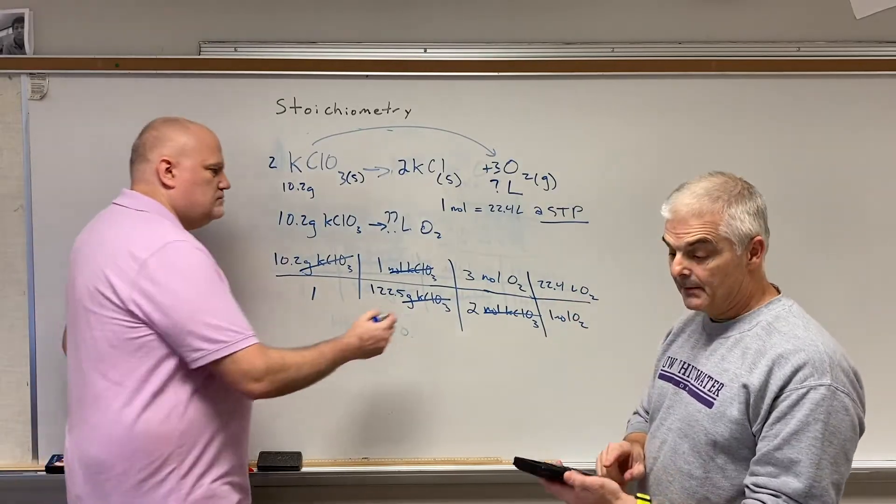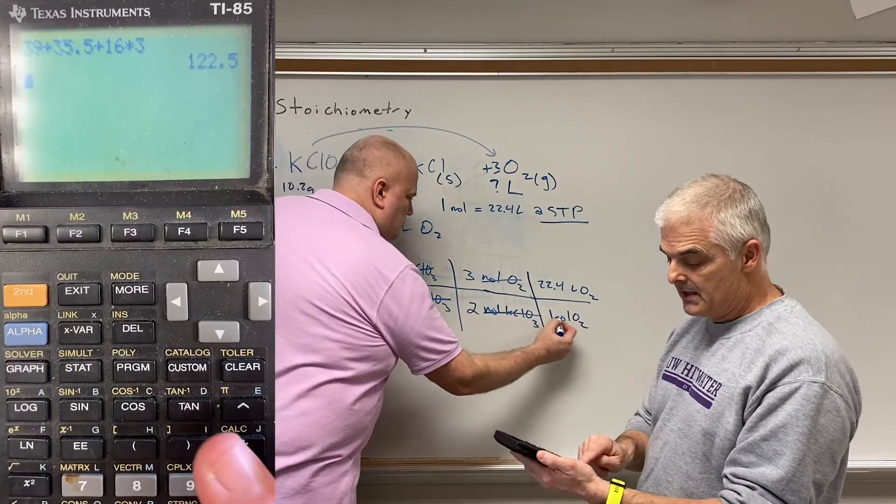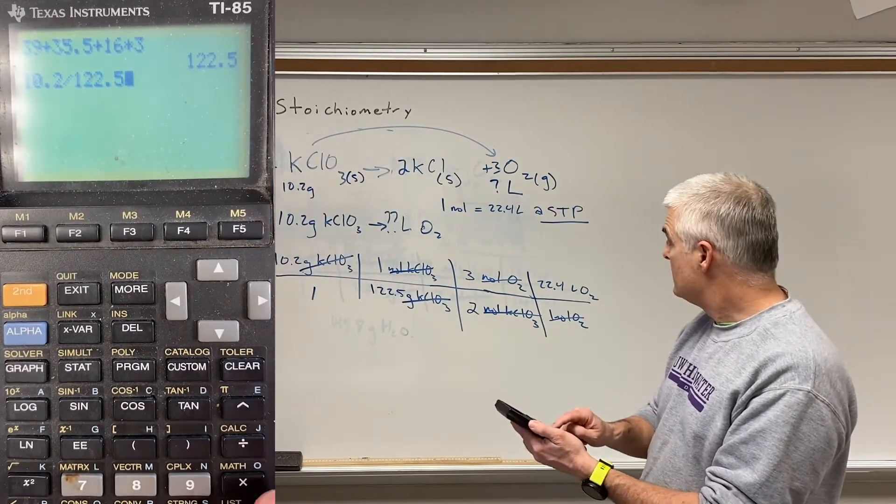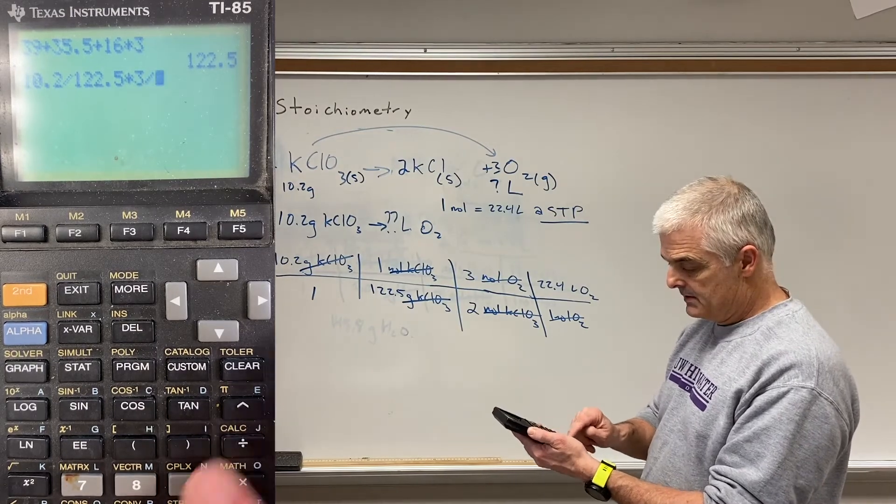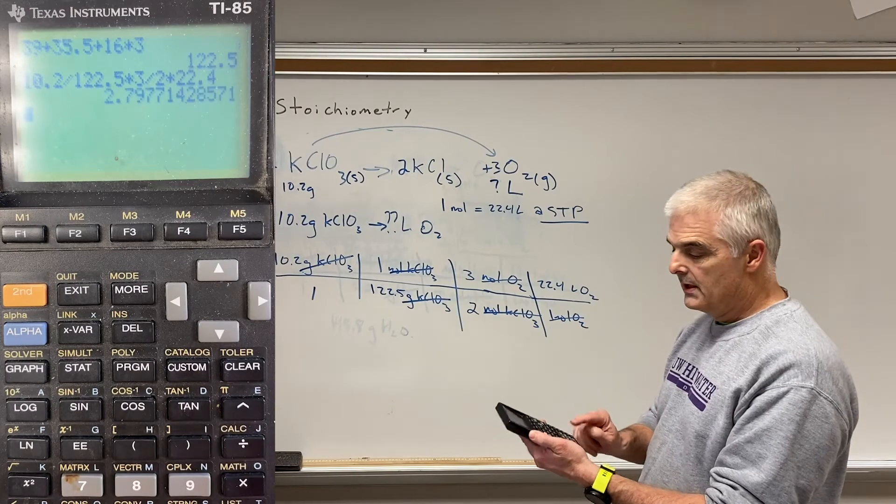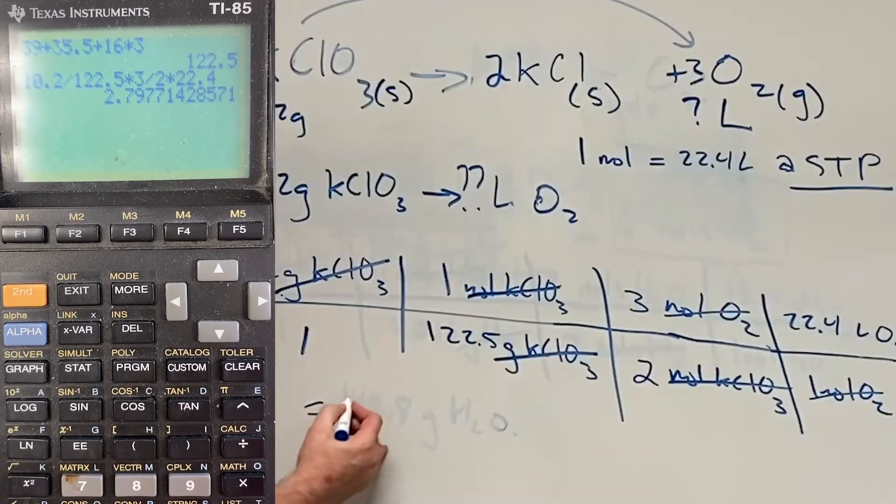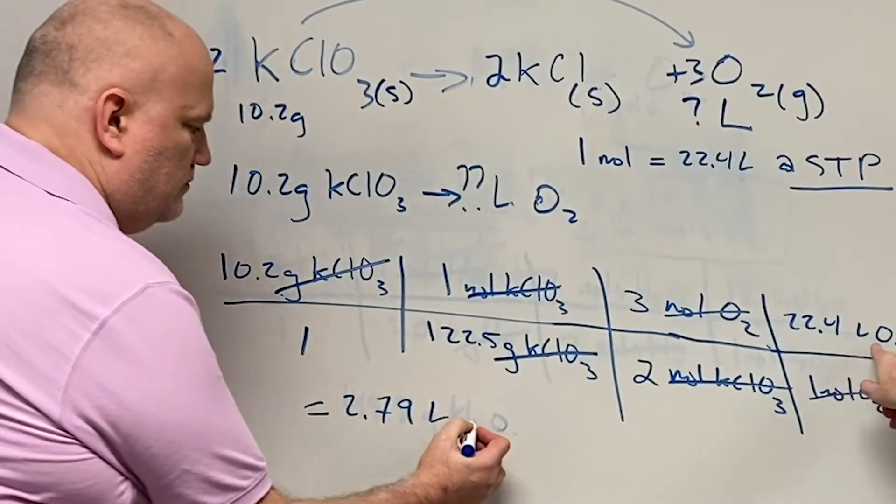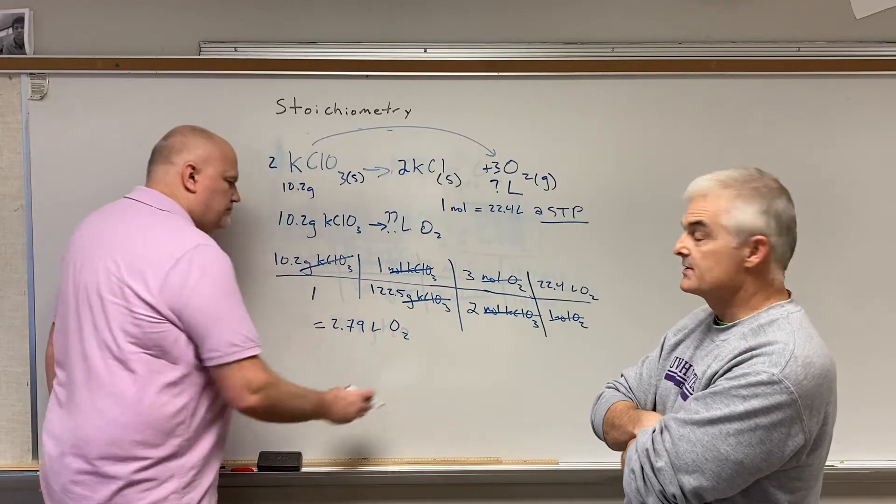And we can cancel. And on my calculator, this is what I'm going to type in. 10.2 divided by 122.5 times 3 divided by 2 times 22.4. I get a grand total of 2.79. And that will be liters of oxygen. And that's the answer.